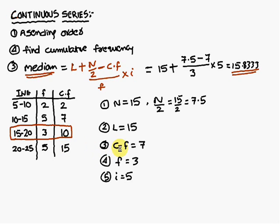Next, what you have to remember is here you have to write the cumulative frequency as 7. This cumulative frequency is always the preceding cumulative frequency. F is the corresponding frequency. I is the corresponding interval.